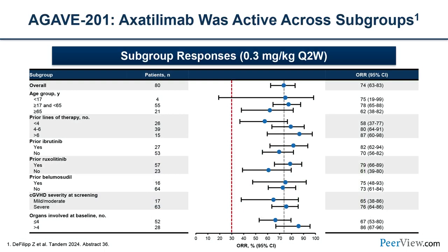Focusing on the low-dose 0.3 mg/kg every two weeks cohort, a subgroup analysis examined patient and GVHD characteristics to identify whether any subgroups responded better or worse to axatilumab. The drug maintained its efficacy across all subgroups — regardless of number of prior lines of therapy, prior FDA-approved medications received, overall chronic GVHD severity, or number of organs involved — axatilumab continued to show good responses.